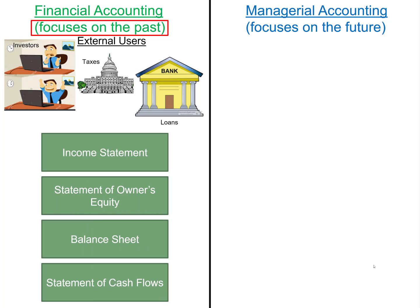The income statement shows the company's profit last quarter or last year. And finally, financial accounting has to follow GAAP, which is generally accepted accounting principles.